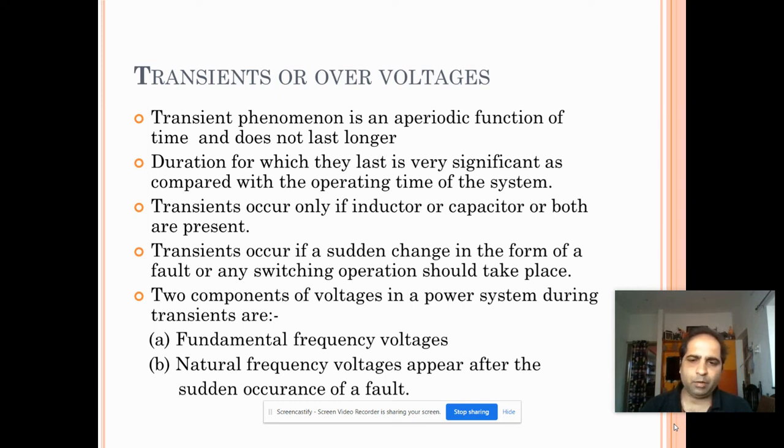Two components of voltages in a power system during transients are: first one fundamental frequency voltages, second one natural frequency voltages appear after the sudden occurrence of a fault.